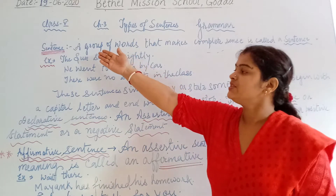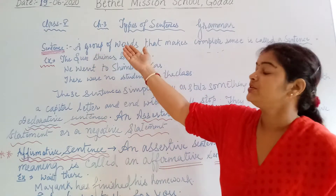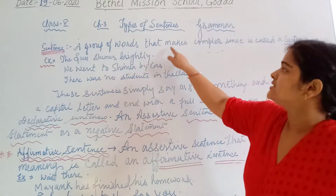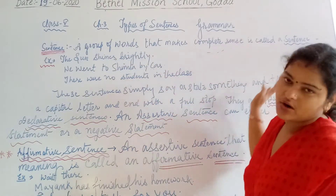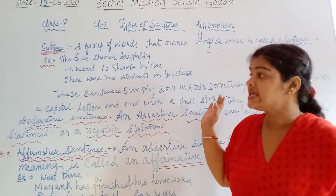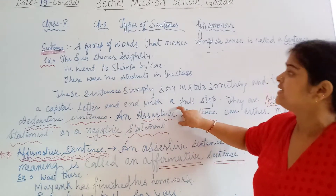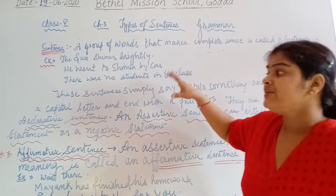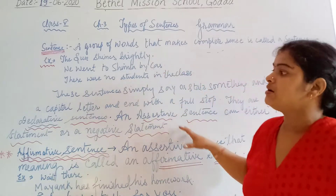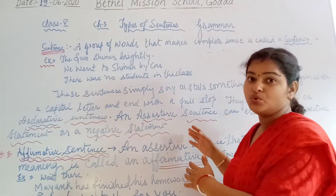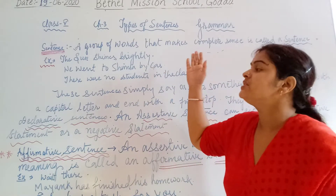So let's begin with the definition of a sentence. As you already know, a group of words that makes complete sense is called a sentence. Now to explain the assertive sentence, I would like to give some examples. I will explain you the definition later — let's begin with the example.